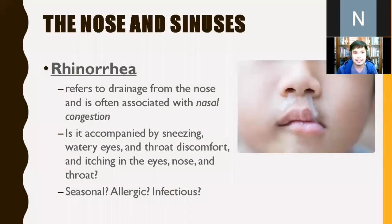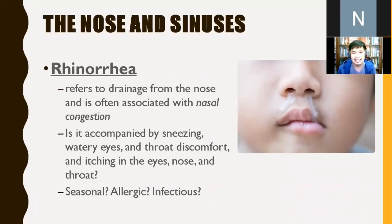Now let's go to the nose and sinuses. Rhinorrhea refers to drainage of the nose, often associated with nasal congestion. Rhinorrhea is typically a clear discharge, accompanied by sneezing, watery eyes, and itching in the eyes, nose, and throat. You can delineate whether the cause is seasonal/allergic or infectious by asking about the different symptoms and history.